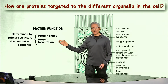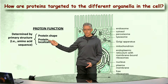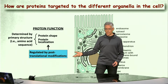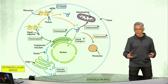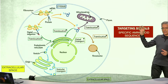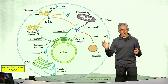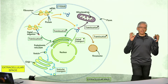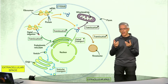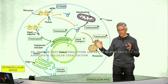Both of these properties — the shape and the localization of a protein — can be modified by post-translational modifications. In other words, there are specific amino acid sequences that function as targeting signals indicating where in the cell any given protein must be localized. Those specific amino acid sequences allow proteins to interact with the right proteins that will then direct them to the right location within the cell.